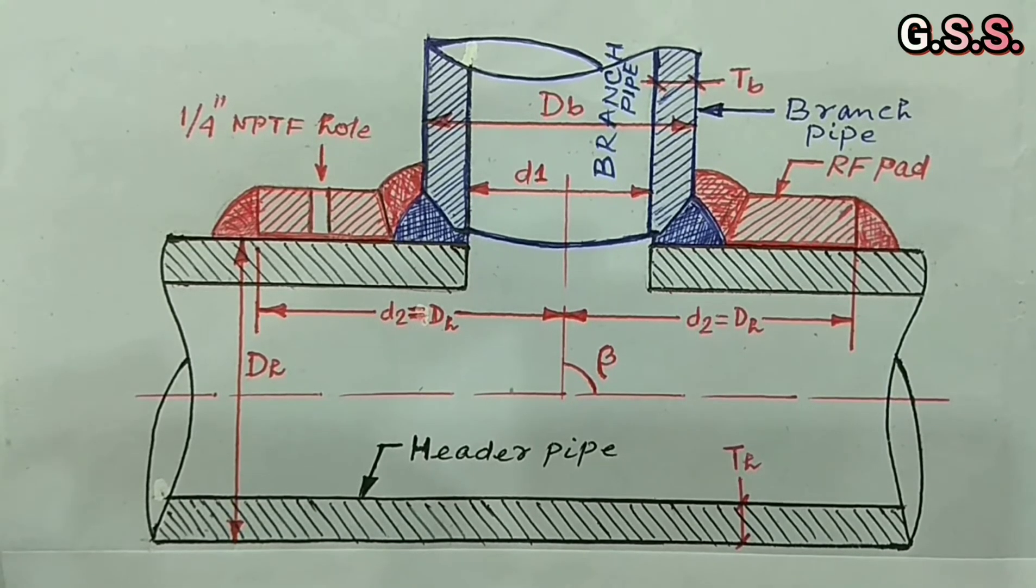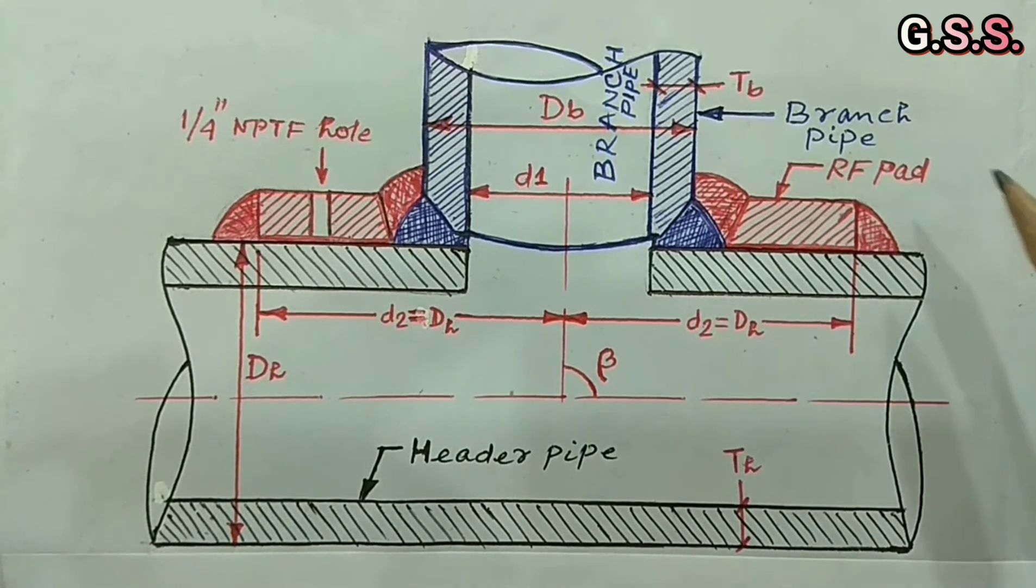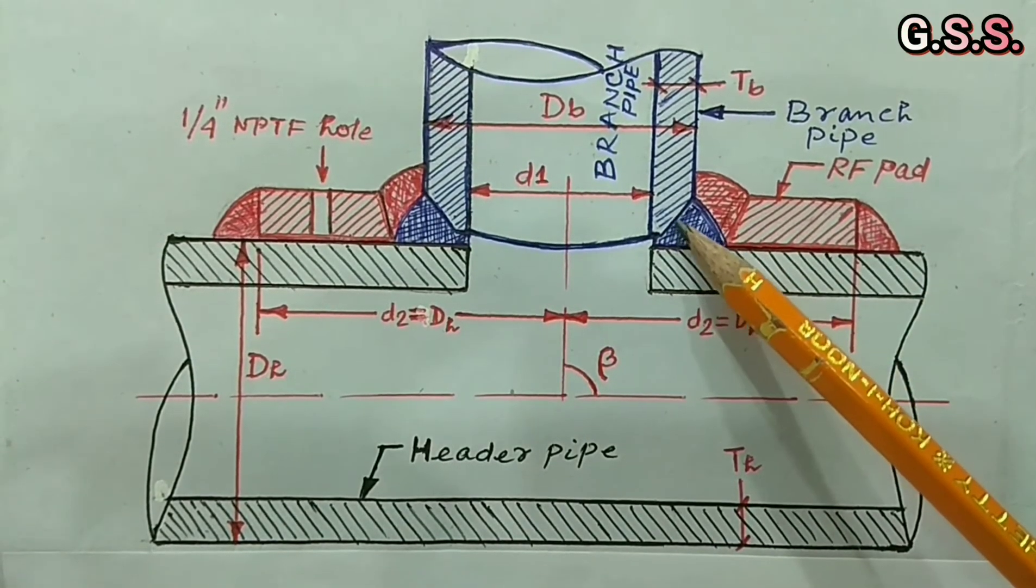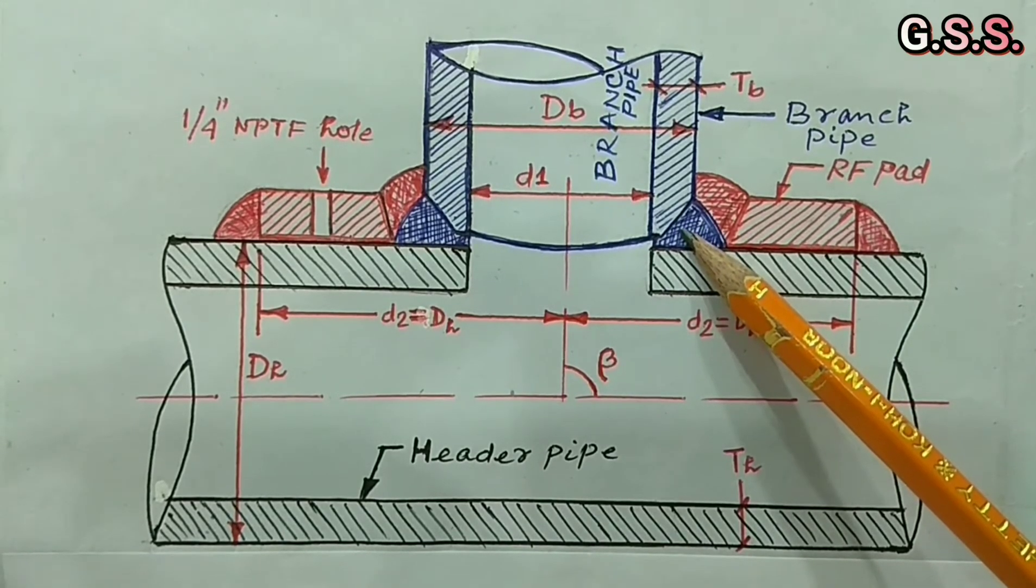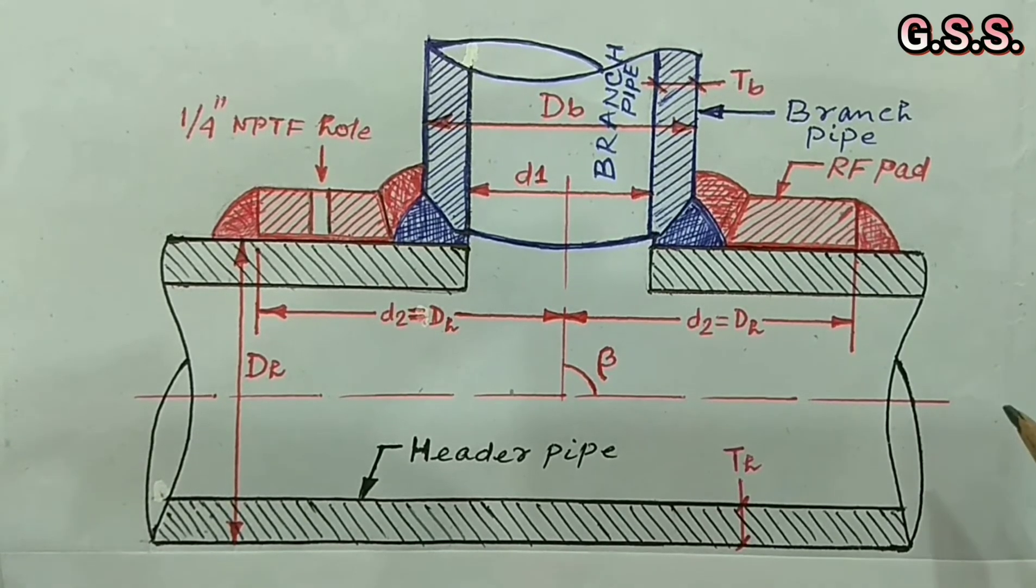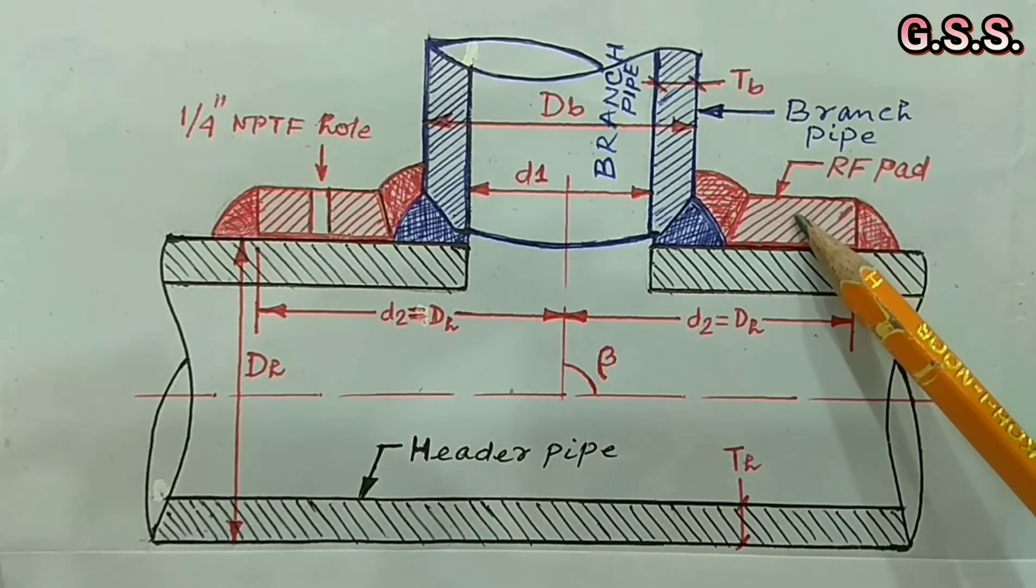First we should consider direct branching without any RF pad, that means unreinforced branching. If it is OK from internal pressure and pipe stress point of view, then no problem. Otherwise we have to go for branching with RF pad.